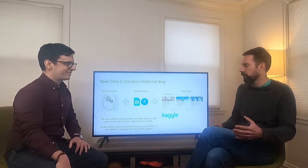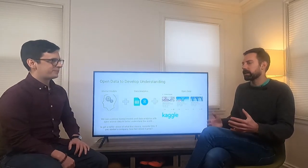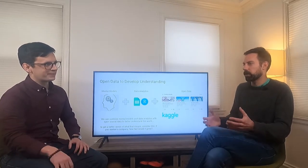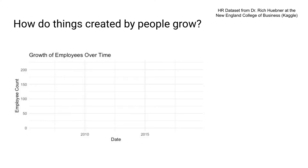So let's do that. I'd like to start with a data set I pulled from Kaggle — it's an HR data set. I'll start with the question: how do companies grow? If we have a startup company, there's a lot of complexity, a lot of things going on. The question is, how is it going to grow? What are the first few months going to look like? What are the first few years going to look like?